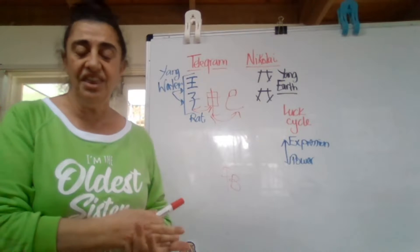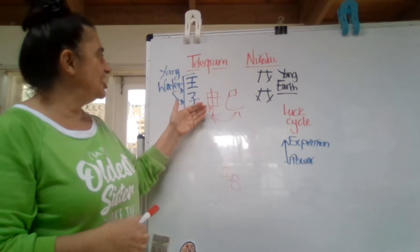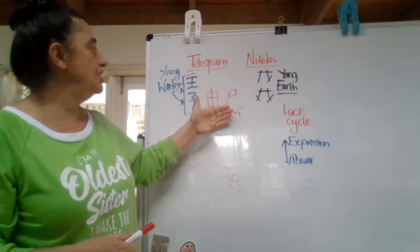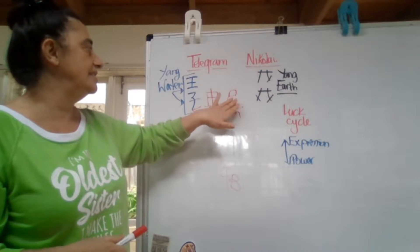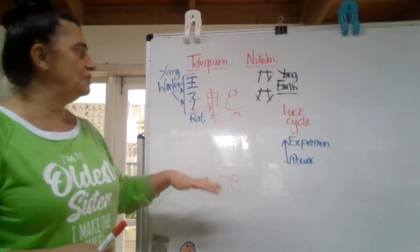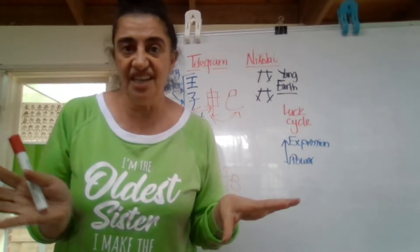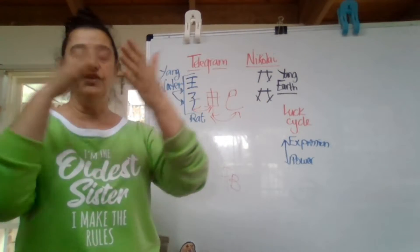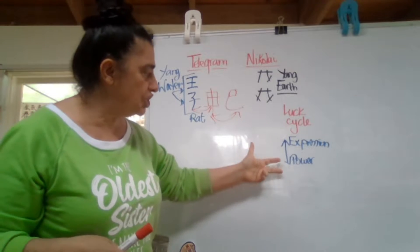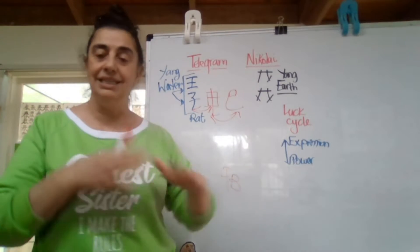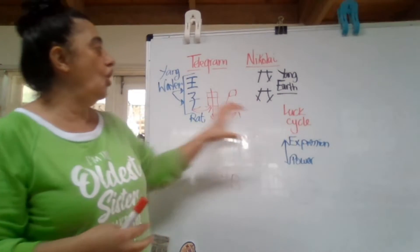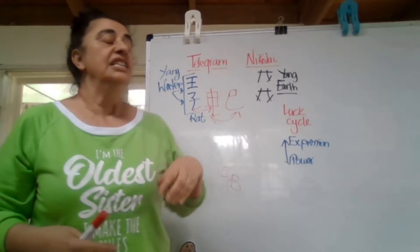And not just that, above that is metal again, so it's metal on metal, and above that is water. And the snake, and for Nicola, for his chart, yes there are some challenges but it's bloody brilliant. And the luck cycle he is in from 35 onwards, 35 to 45, is about expression and power.